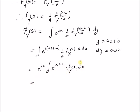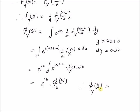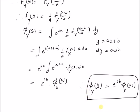This simplifies to e to the power sb times the integral of e to the power (as times x) times f_x of x dx, which by definition is the moment generating function of x with parameter a times s. Therefore the moment generating function of y is e to the power sb times phi_x of (a times s). So the moment generating function of the linearly transformed random variable y equals ax plus b is the product of e to the power sb and the MGF of x evaluated at a times s. Thanks for watching.